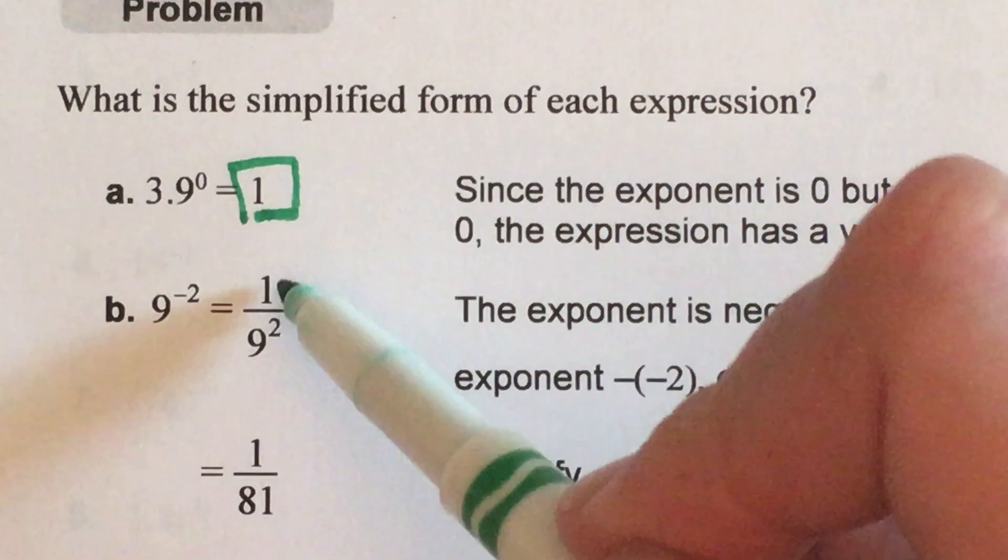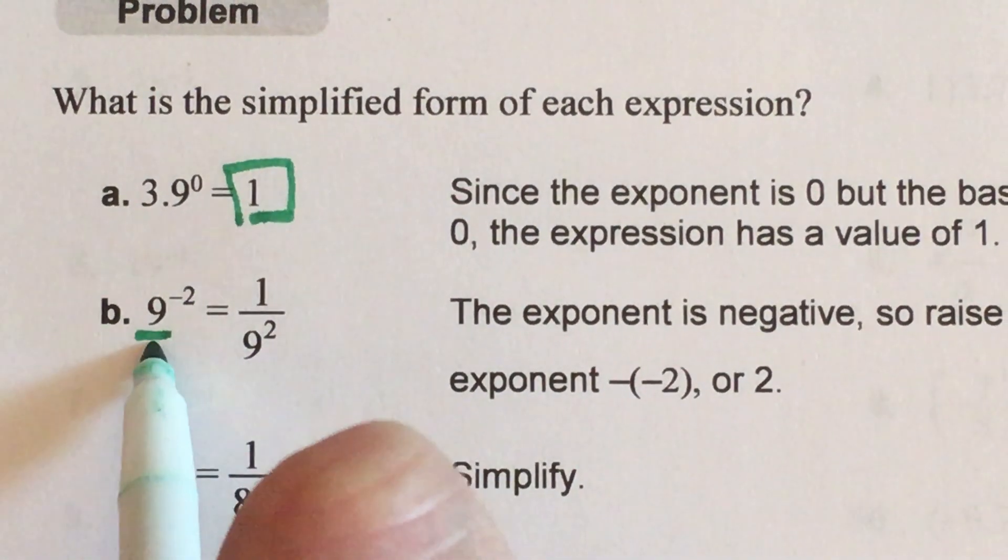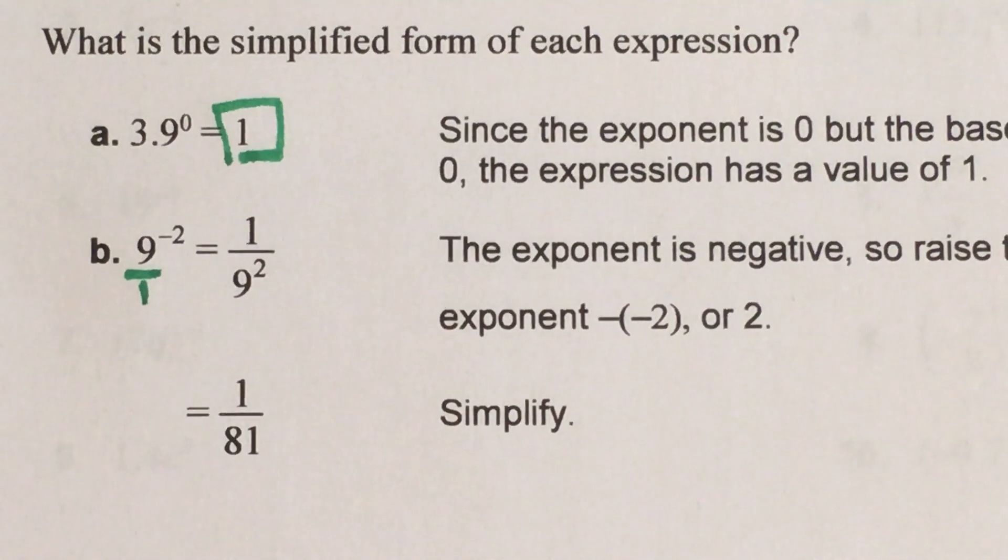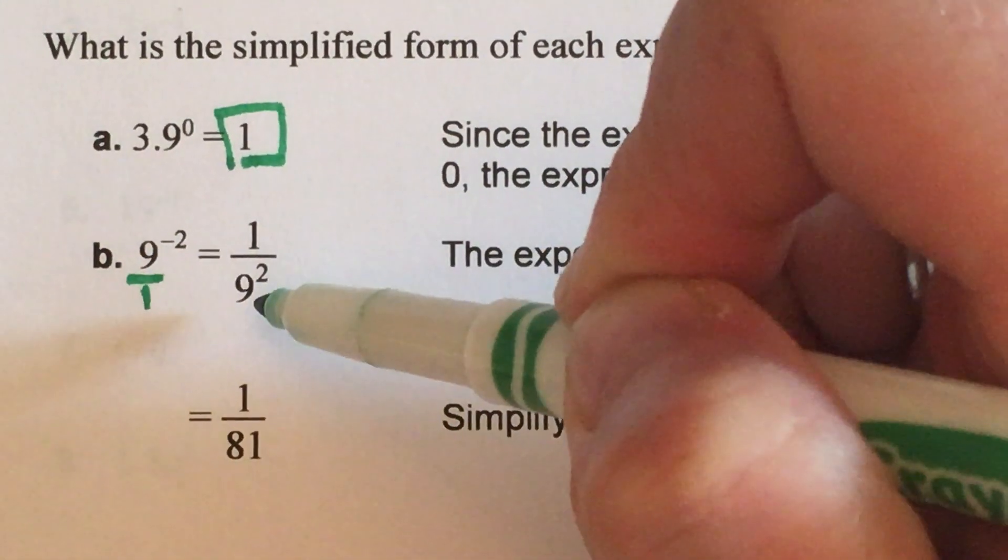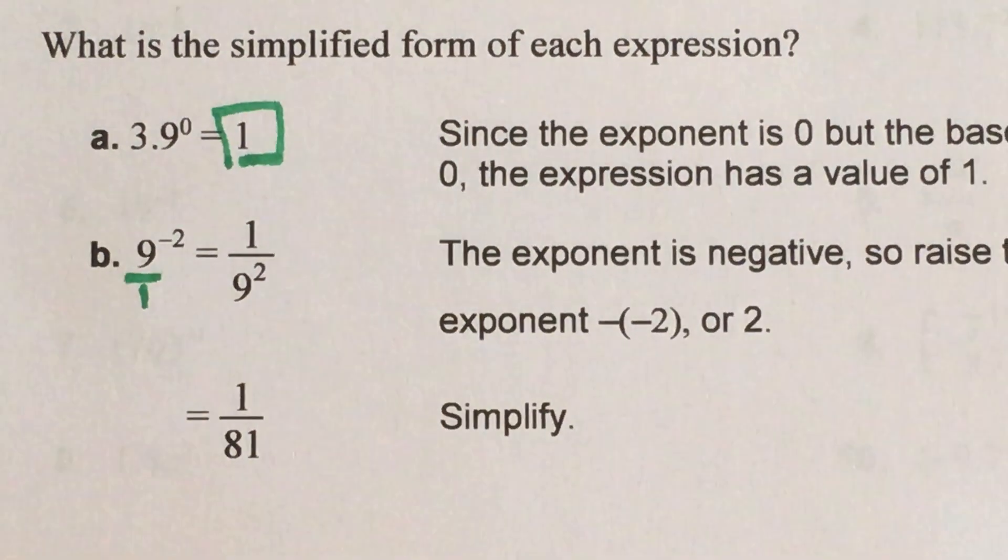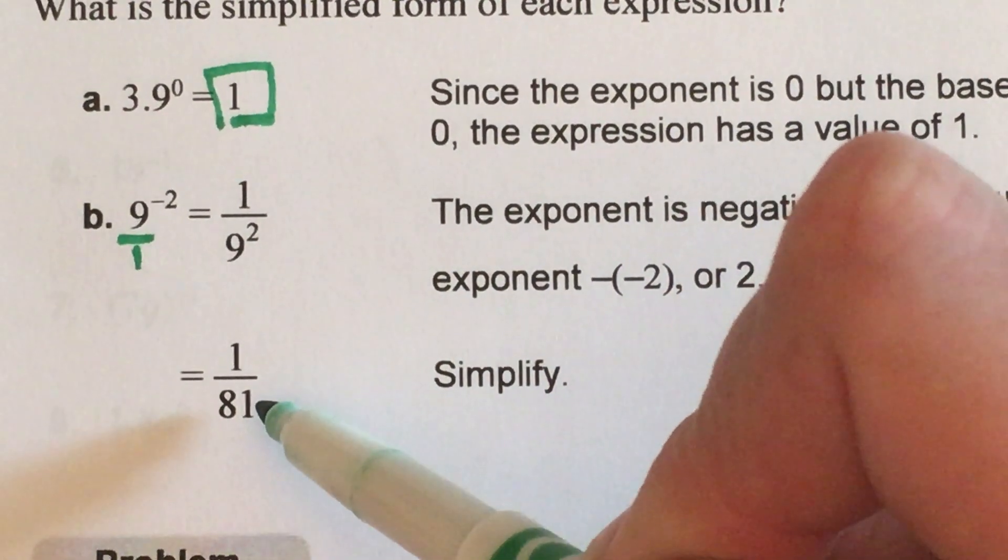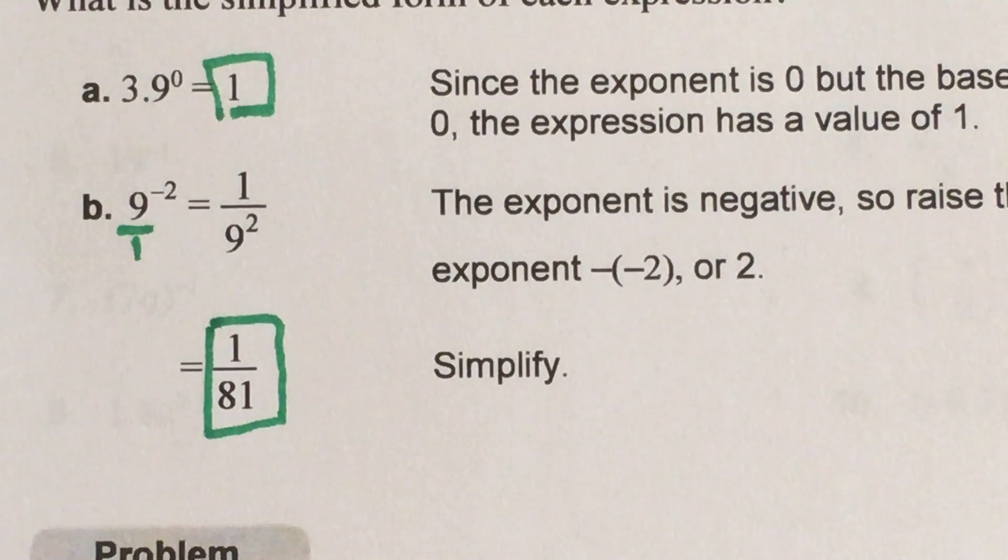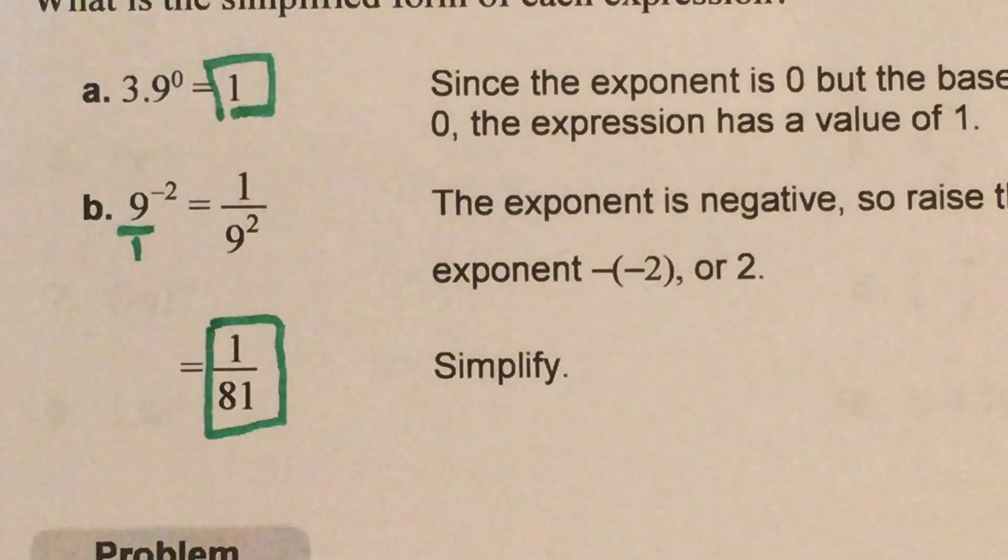Part b: 9 to the negative 2. That is equivalent to 1 over 9 squared. Remember the integer has a 1 underneath of it. You take the reciprocal of that base which was 9, so now the 1 is on top in the numerator and the 9 is in the denominator. My exponent is now positive and then we can simplify it because 9 times 9, 9 squared is 81. So my final answer is 1 over 81.